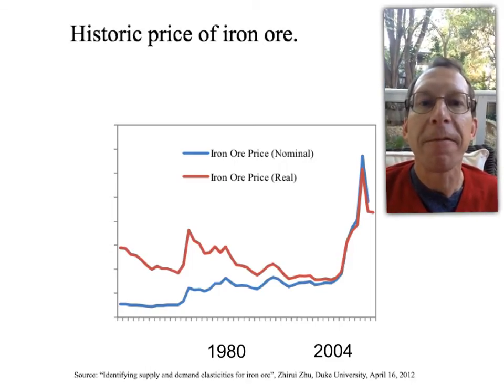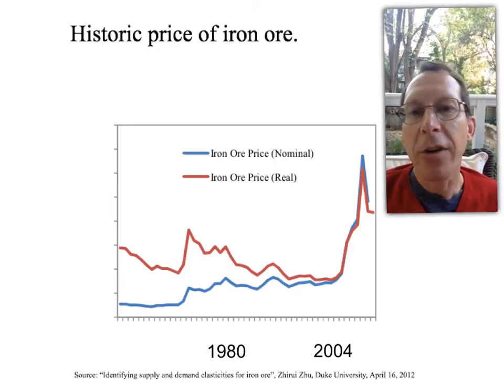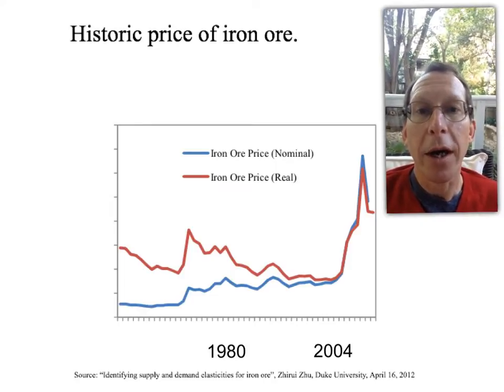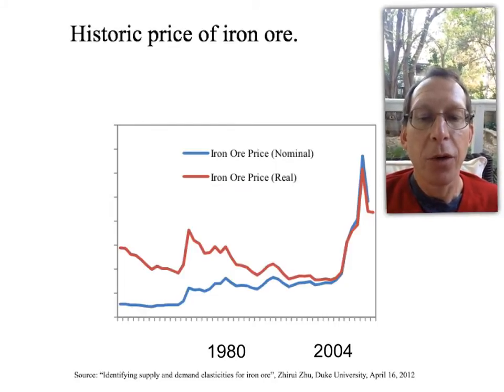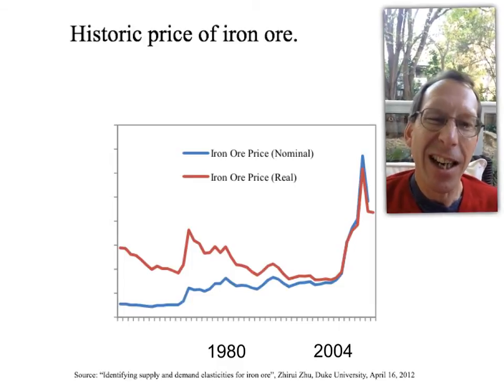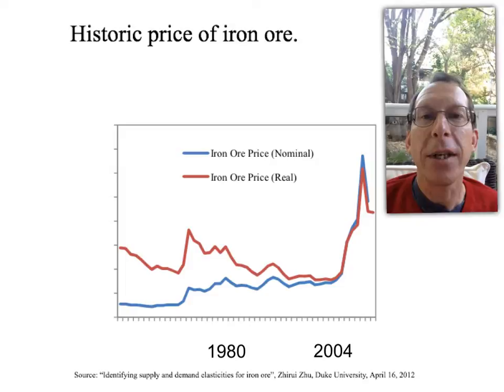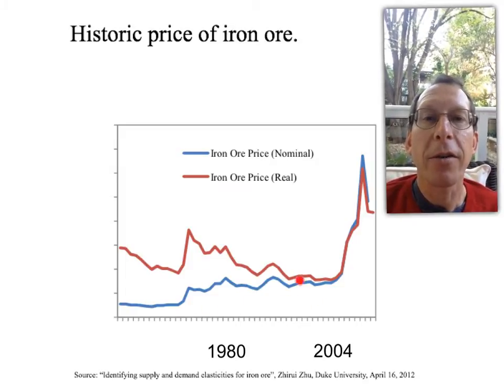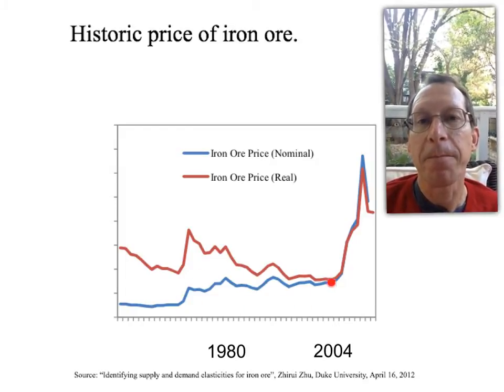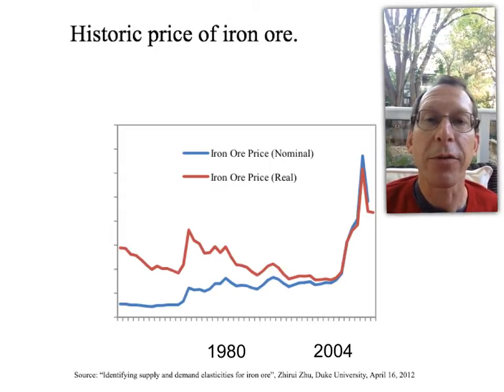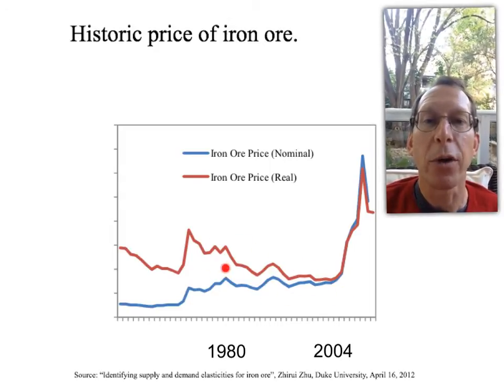First let's look at some facts. The diagram here shows world iron ore prices. From about 1980 to 2004, world iron ore prices are pretty flat in nominal terms at around 40 US dollars per tonne and they're actually falling once you adjust for inflation. That's what the real line means.